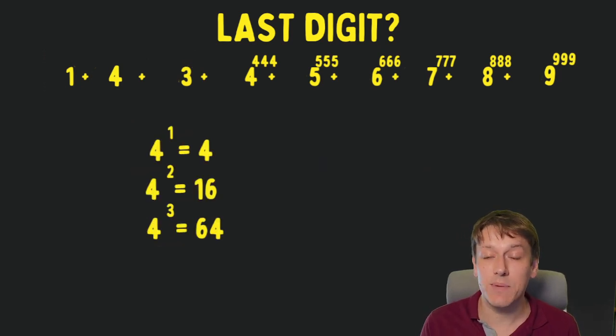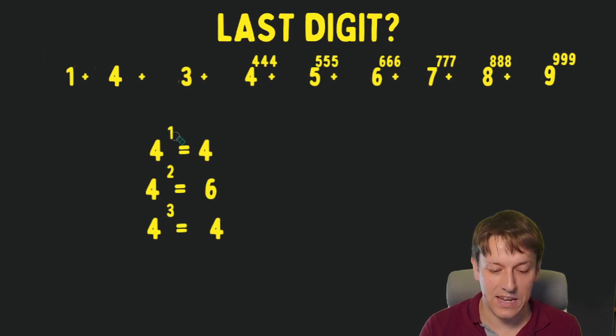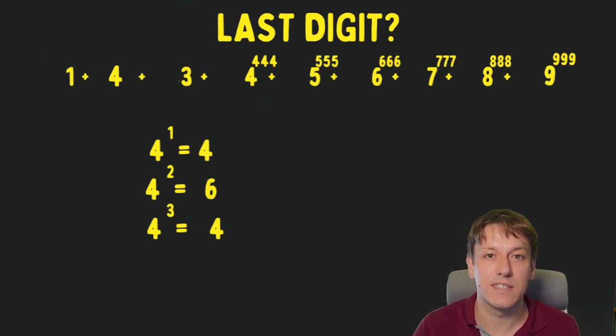Then we can go through the other ones pretty quickly from here. The powers of 4 are 4, 16, 64, etc. So this one has a pattern that just switches between 4, 6, 4, 6, so any odd power is going to end in 4, any even power is going to end in a 6. 444 is even, so the last digit of 4 to the 444 must be a 6.